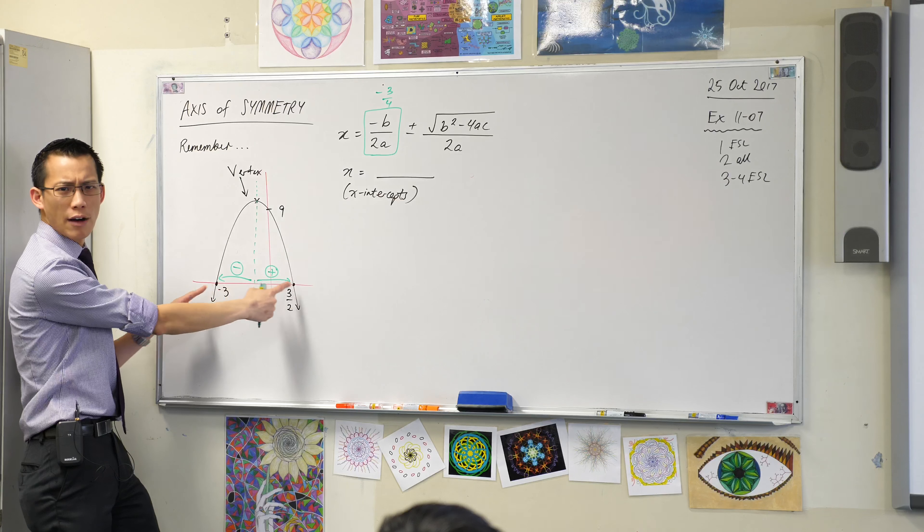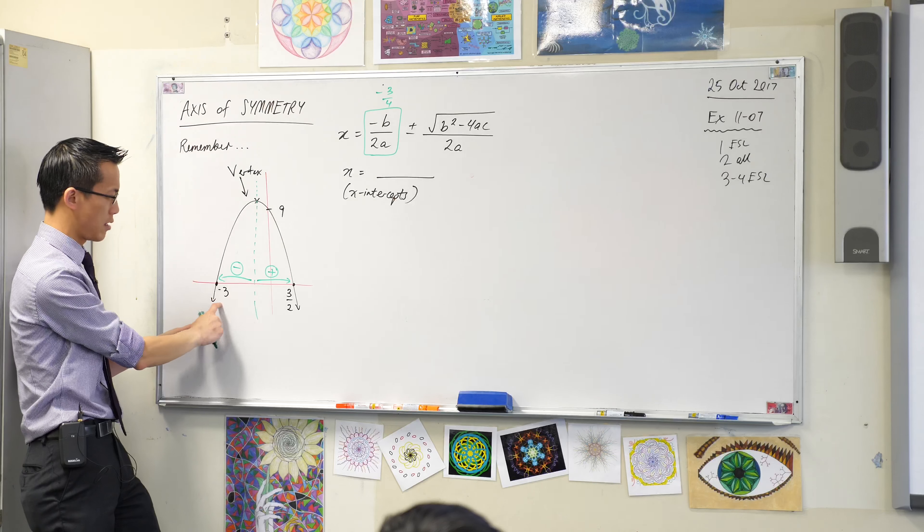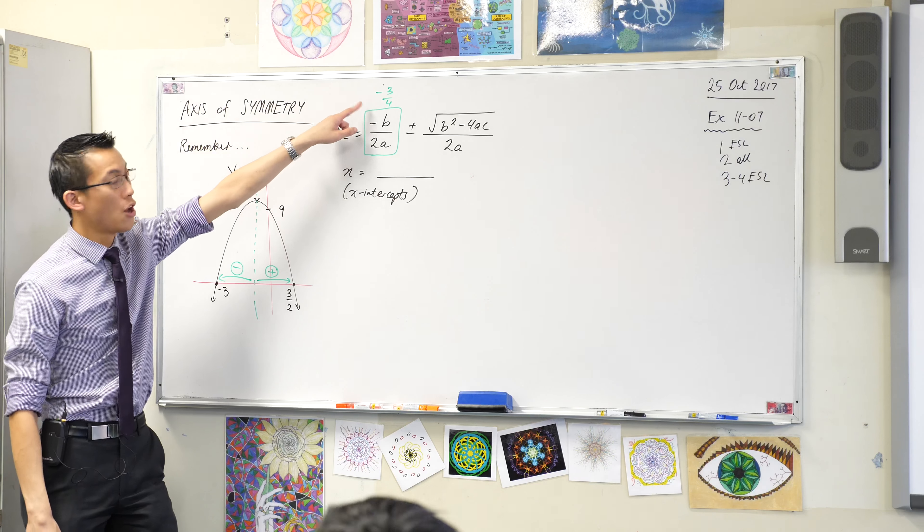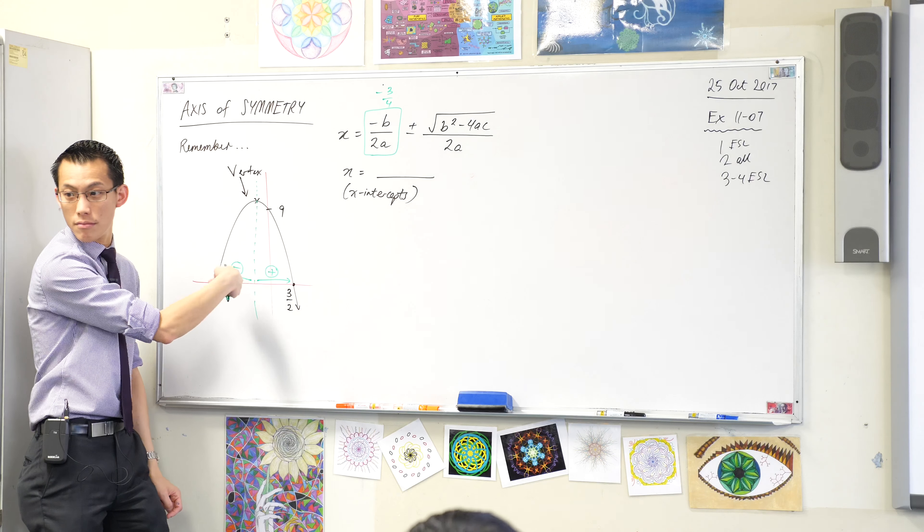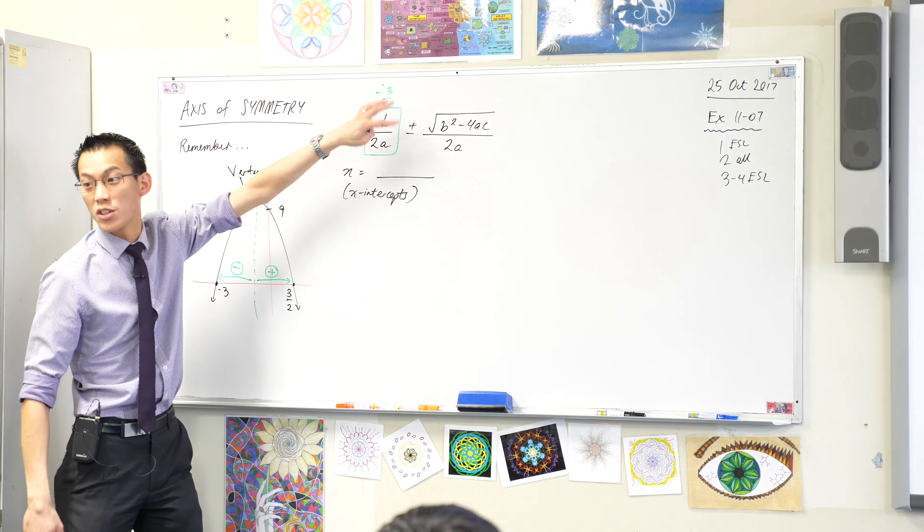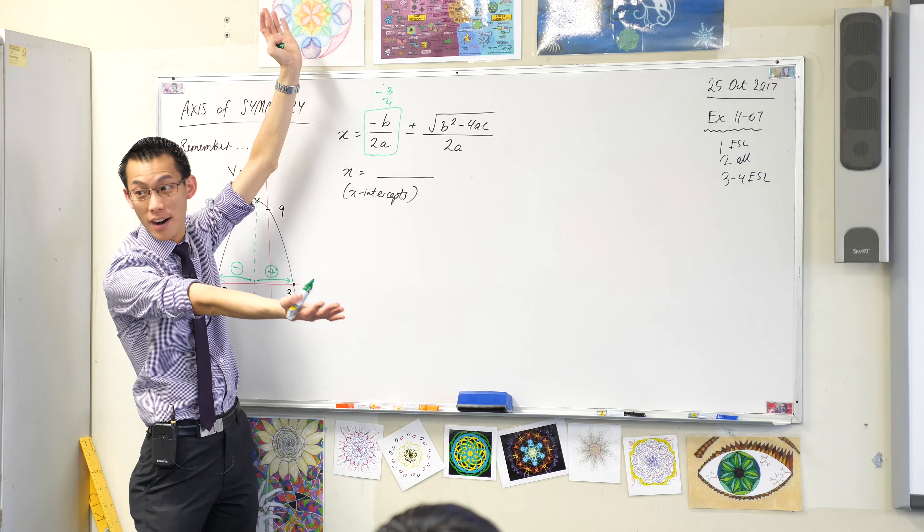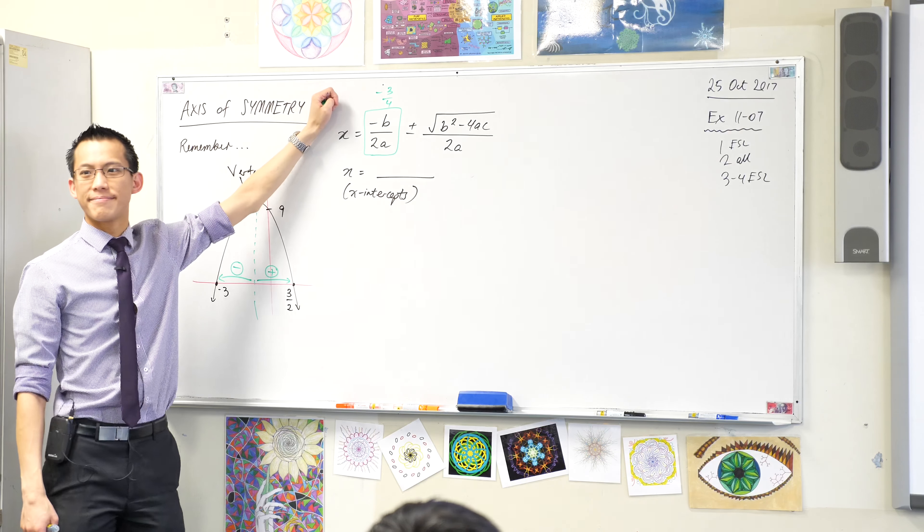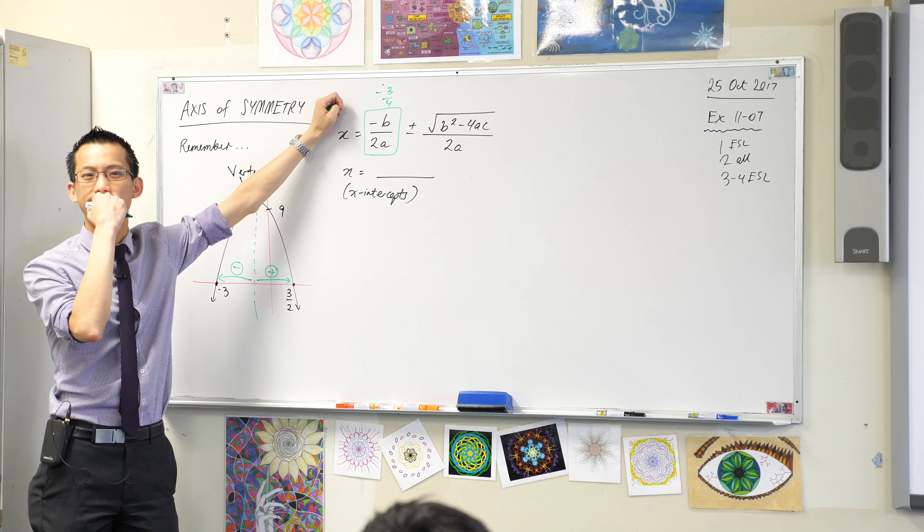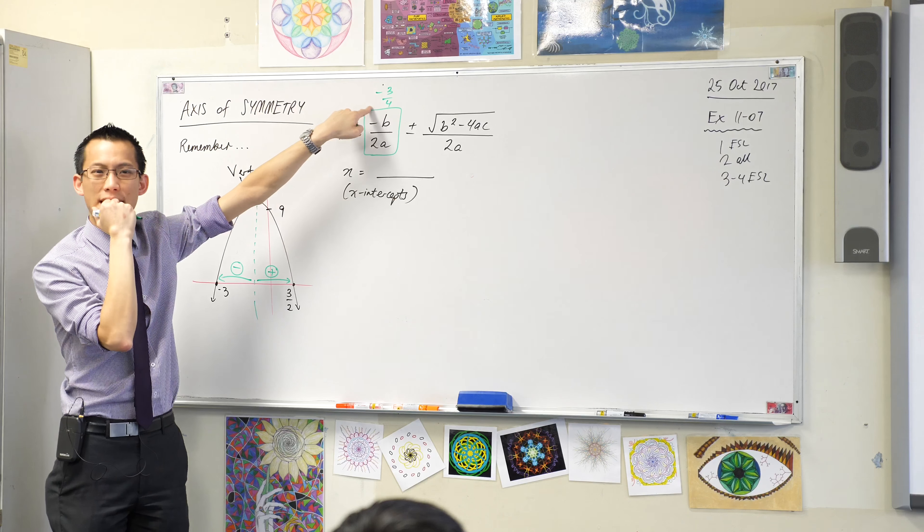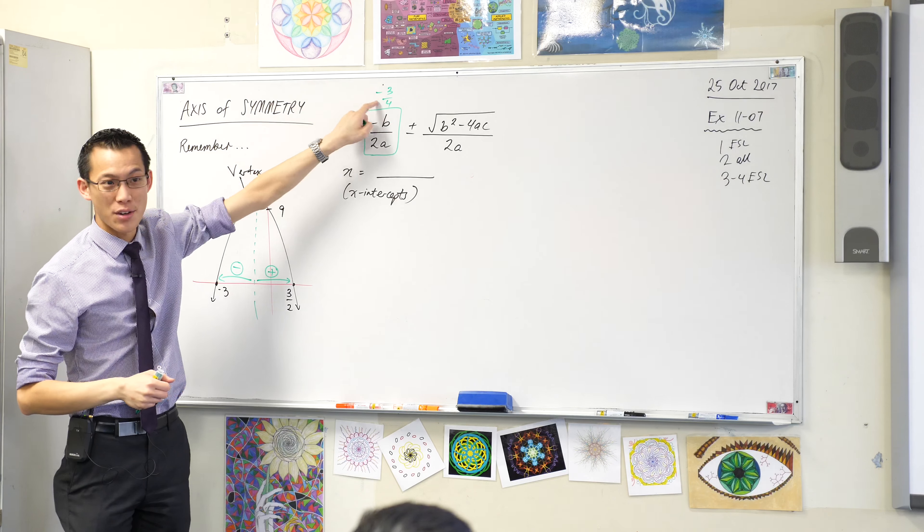No, it's negative. Look, it's on the left hand side. It's negative. Once you've evaluated the whole number, if you get minus three over four.